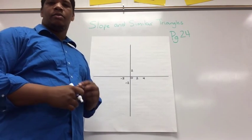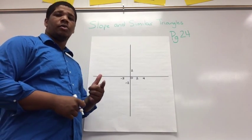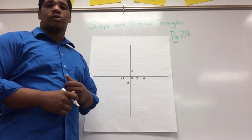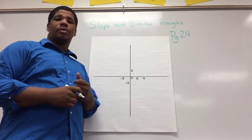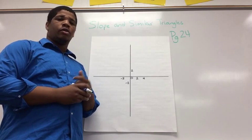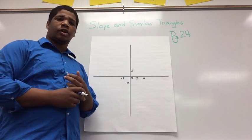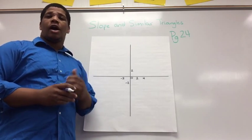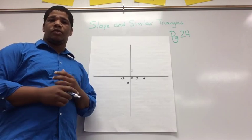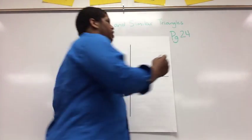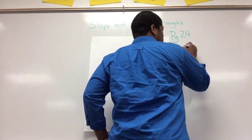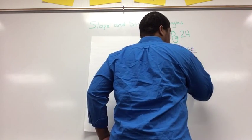Hi everybody, in this video we're going to be talking about slope and similar triangles. So turn to page 24 in your composition notebook and at the top right, slope and similar triangles. So I know we have two different formulas for slope, but for this lesson we're going to use the formula rise over run.